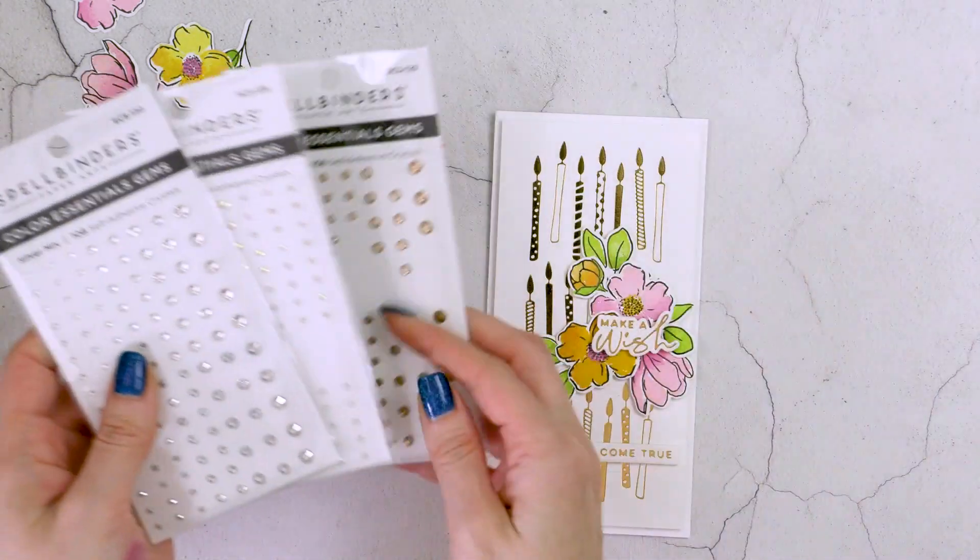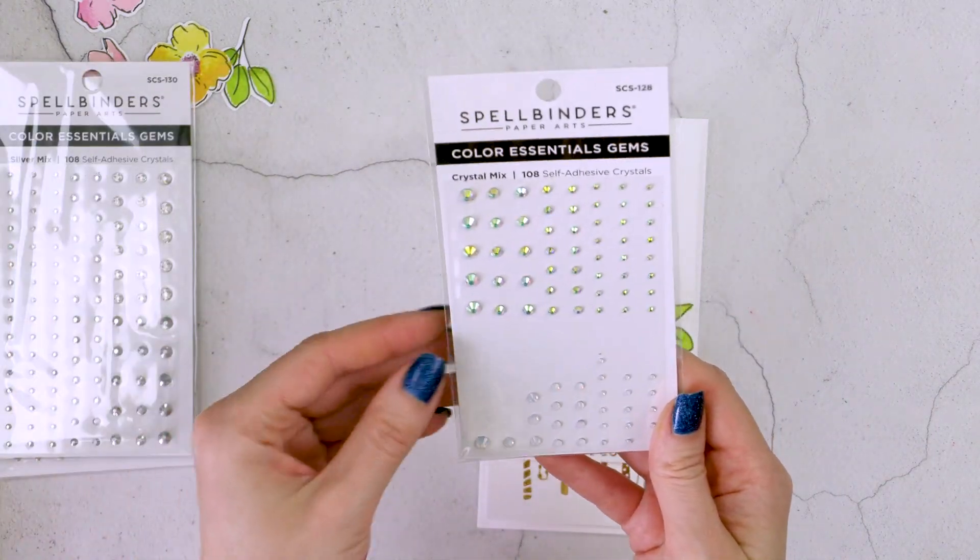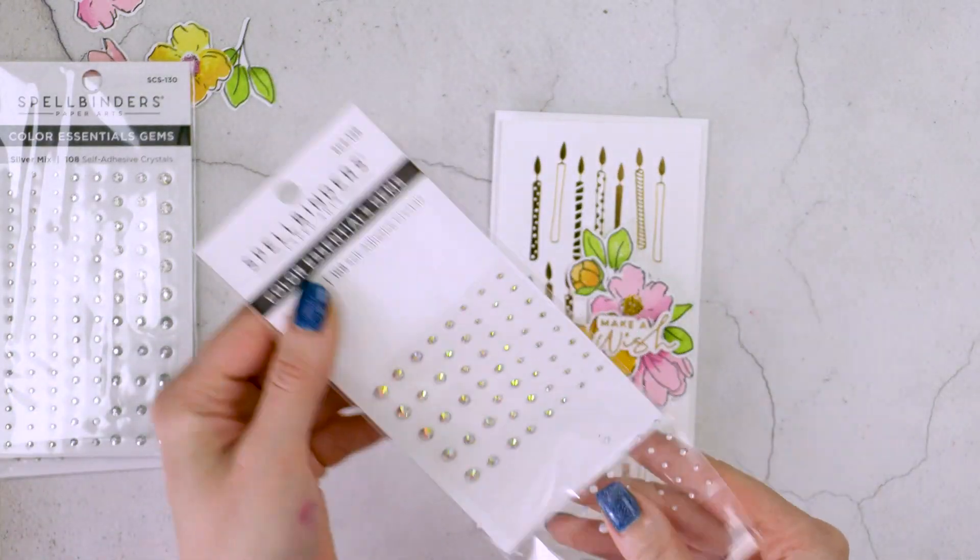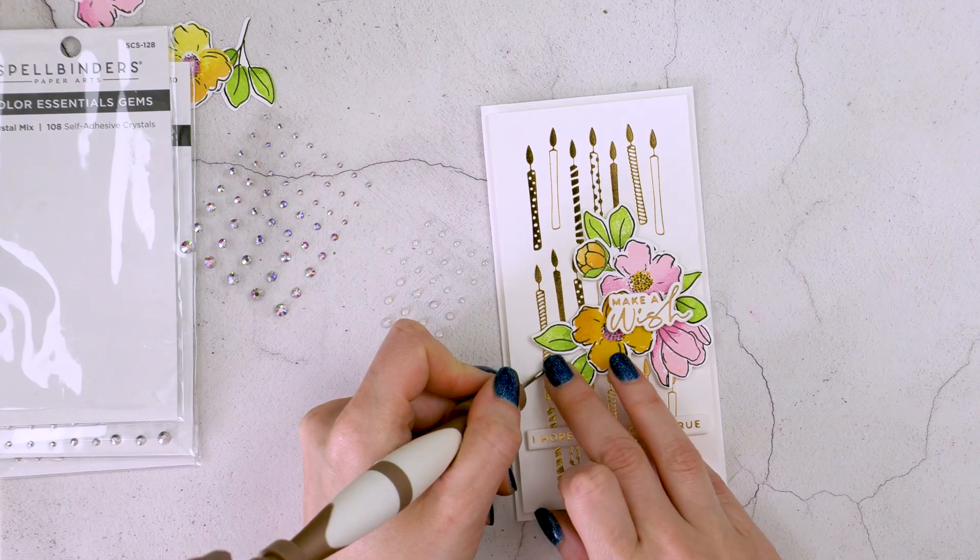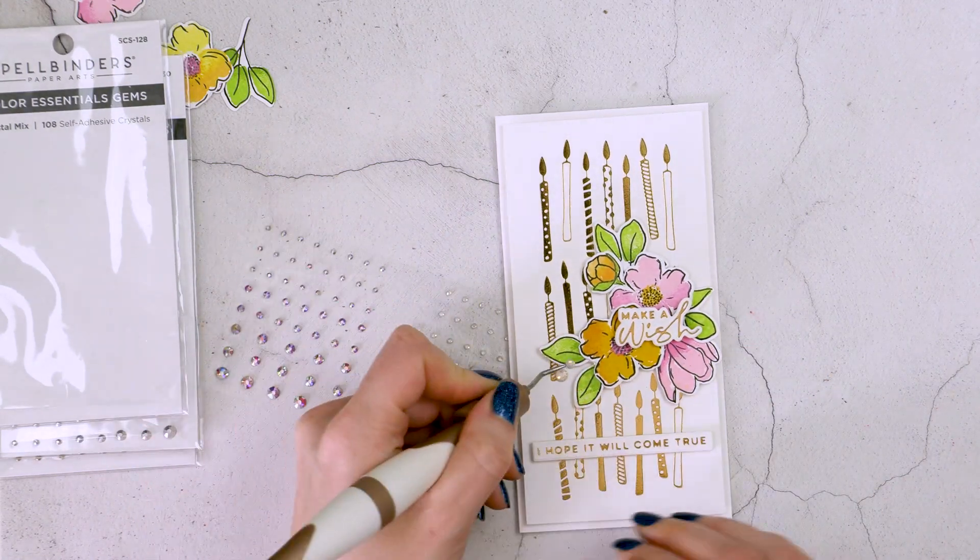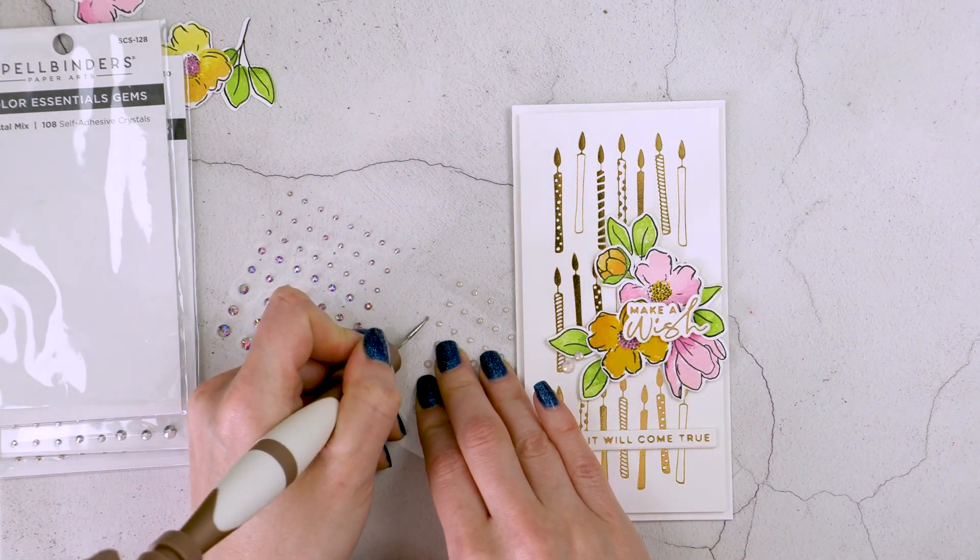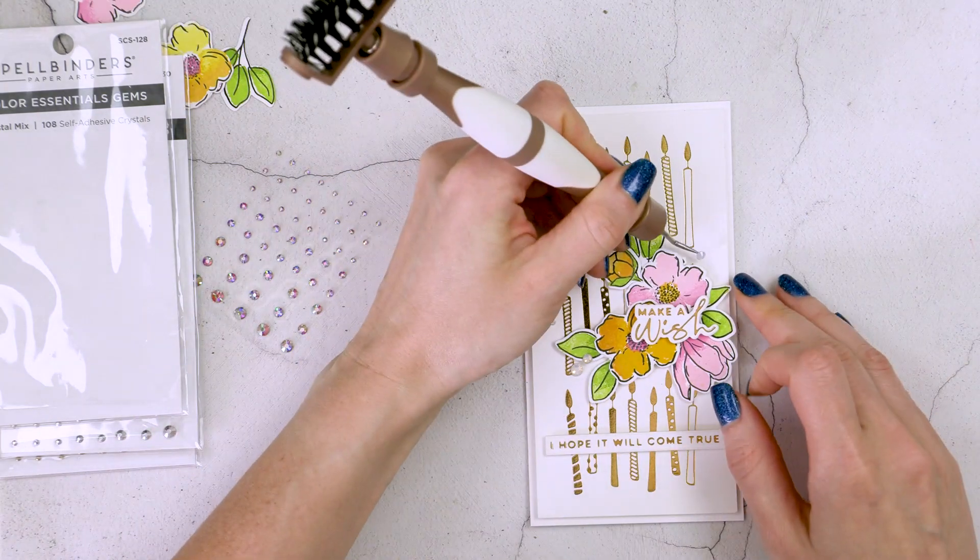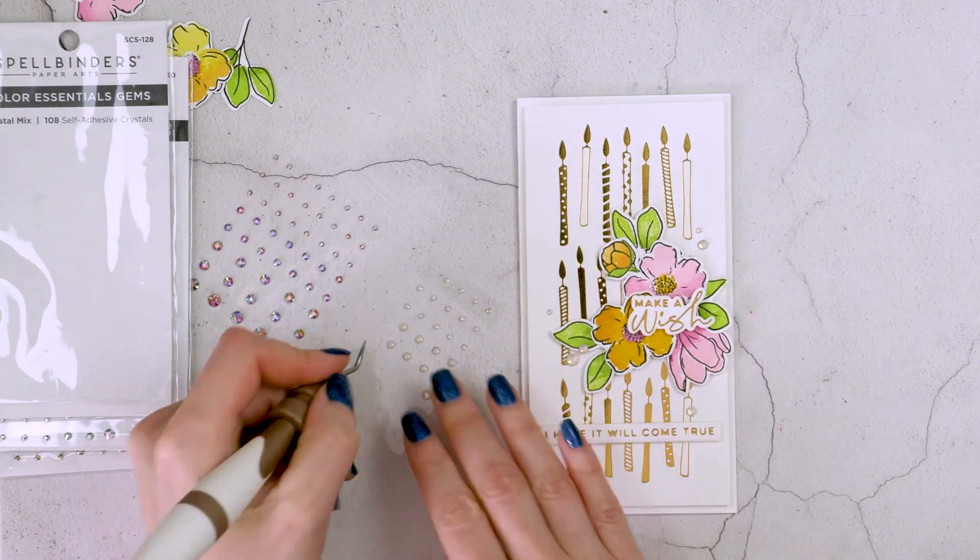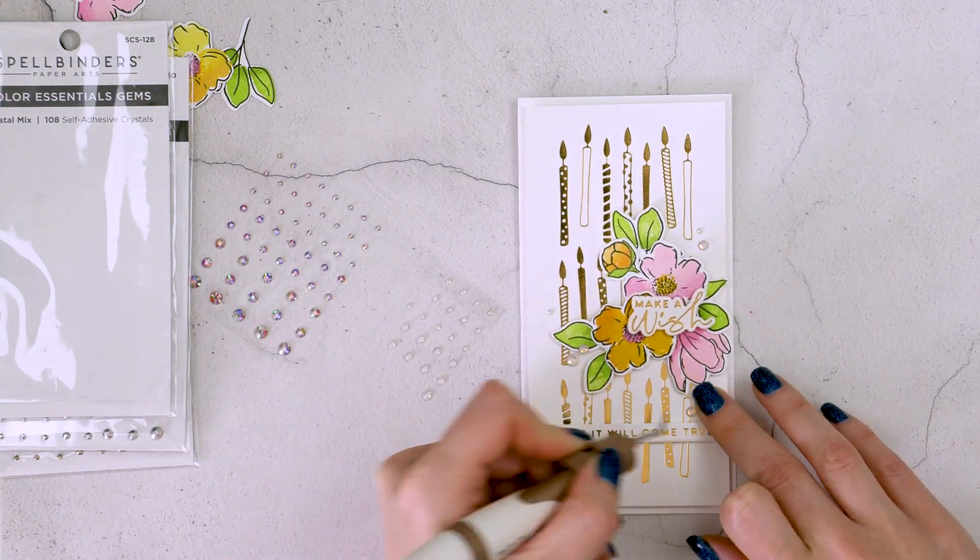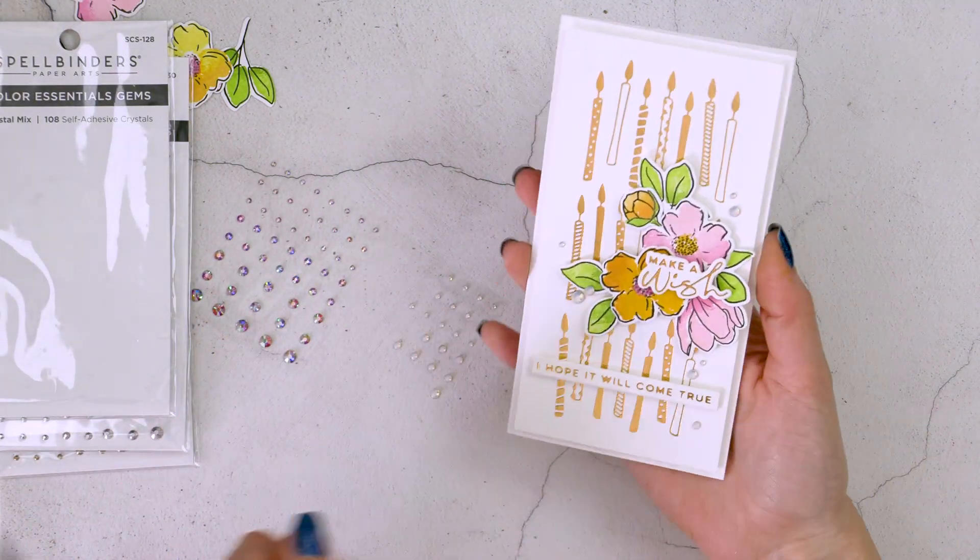Now I also have these color essential gems from Spellbinders and I decided I wanted to add just a couple of gems to my cards here and there. I wanted to scatter them on the background to embellish both of the cards a little bit. Now these gems are quite nice they're actually glass so not plastic so very nice high quality gems and embellishments for your card. Here I'm using my Spellbinders tool in one to pick up the gems and position them on the background and I'm just adding a couple of gems here and there scattering them on the background.